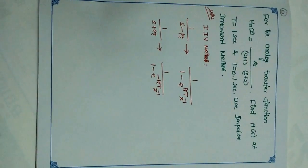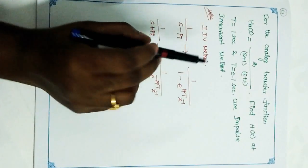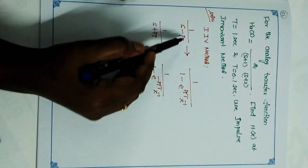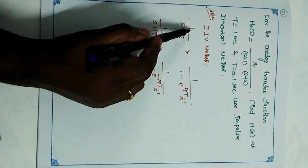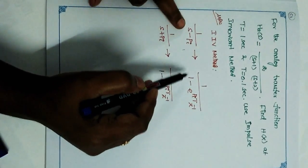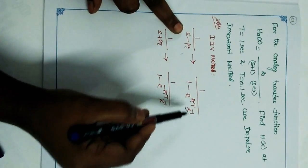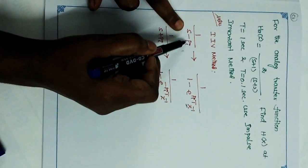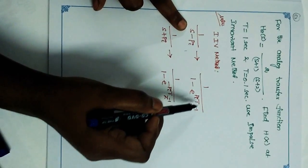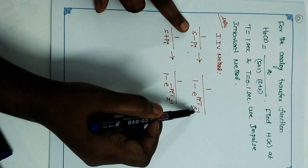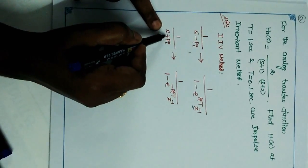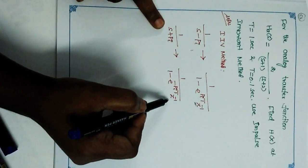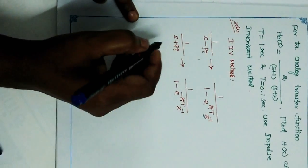Before solving, we need the formula. Whatever value is given, you have to convert it into the form 1/(s-p) or 1/(s+p) in the s-domain, then convert to the z-domain using the formula: 1 divided by (1 minus e^(p·T) · z^(-1)). If we have s+p_i, the z-domain form becomes 1 divided by (1 minus e^(-p_i·T) · z^(-1)).